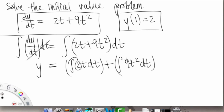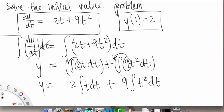We can pull out this 2 and the 9 in front because they're just constants. So we have 2 times the integral of t dt plus 9 times the integral of t² dt.